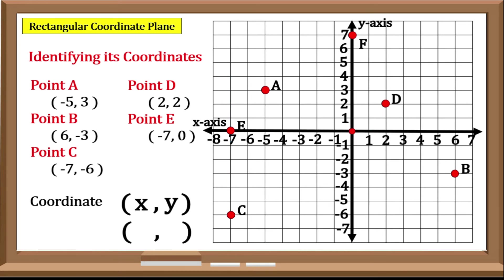Let us try Point F. Create a vertical line along the X-Axis from the given point, which is 0, and a horizontal line along the Y-Axis from the given point, which is positive 7. So therefore, the coordinates of Point F are 0, positive 7.